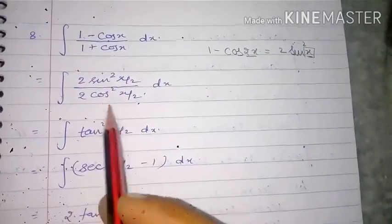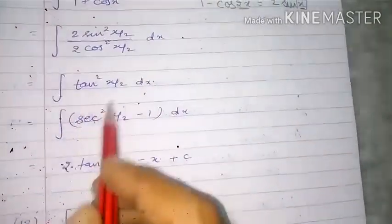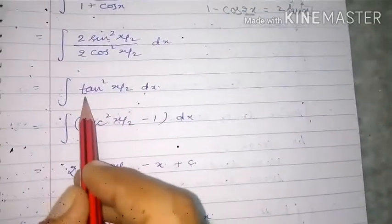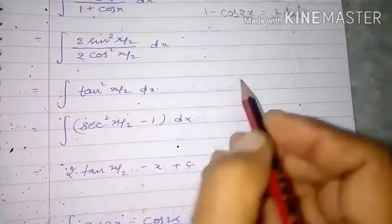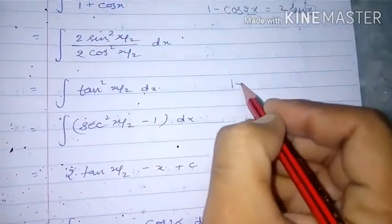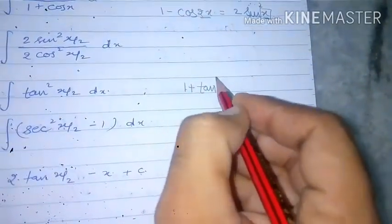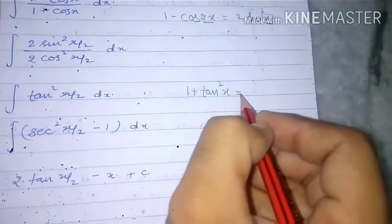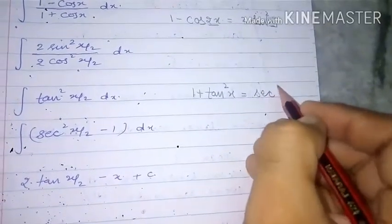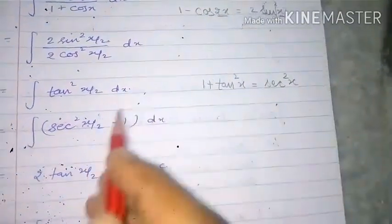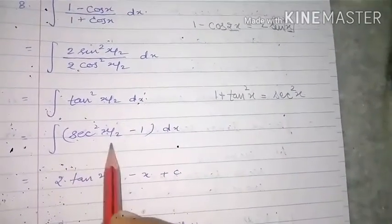After cancellation, sin²/cos² gives tan²(x/2). We cannot directly integrate tan²(x/2), so we use the class 11 identity: 1 + tan²x = sec²x, therefore tan²(x/2) = sec²(x/2) - 1.